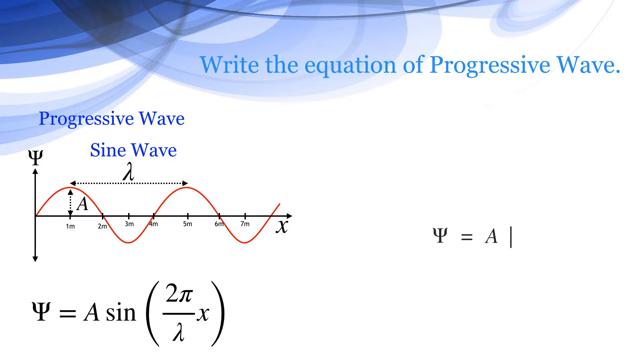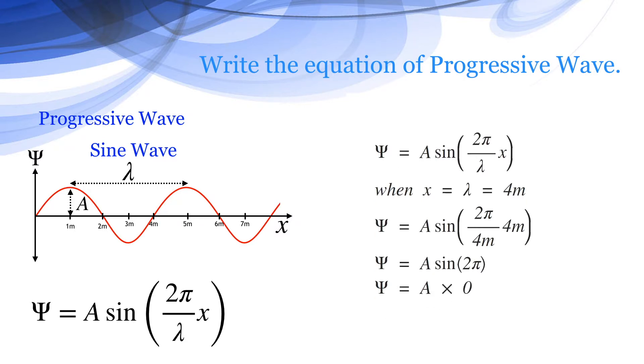The equation is psi equals A sine of 2π by λ into x. When x equals λ, that is 4 meter in this case, then psi equals A sine of 2π by 4 meter multiplied by 4 meter, which comes to A into sine of 2π. Sine of 2π is 0. So, psi becomes A into 0 or 0, which is the value of psi at 4 meters.